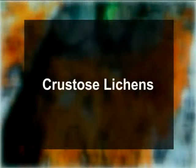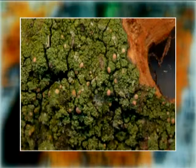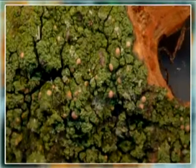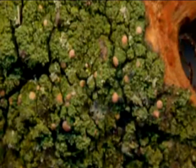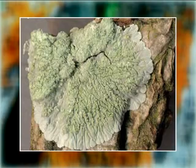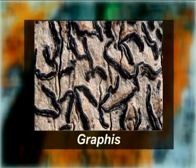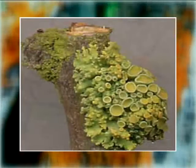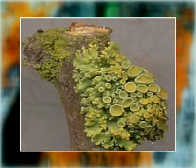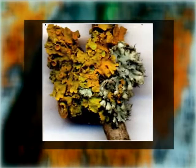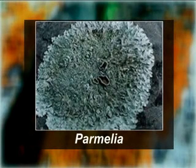The second category is Crustose lichens: the algal cells are covered by a distinct layer of fungal tissue. The surface of the thallus is usually divided into more or less hexagonal areas called areolae. The thallus is very closely adhered to the substratum and provides a crust-like appearance — for example, species of Graphis. The third category is Foliose lichens: the thallus is flat, leaf-like, well-branched, lobed, and attached to the substratum with the help of rhizoid-like rhizines. The external appearance is like that of wrinkled and twisted leaves — for example, species of Parmelia.